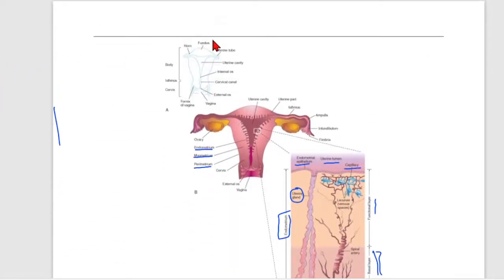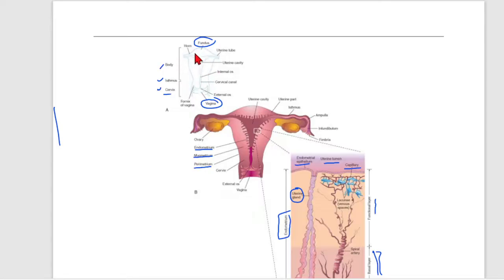Looking at the diagram, this is the fundus — the upper part of the uterus body. Below it is the vagina. You can compare the cervix, isthmus, and body: the isthmus is like a neck, the body's superior part is called the fundus, and inside is the uterine cavity.